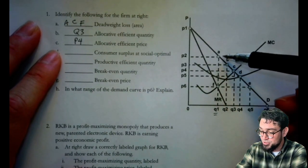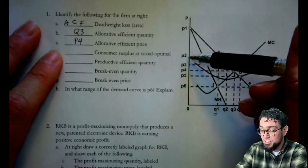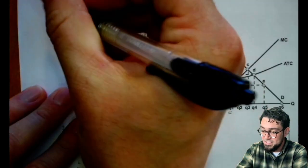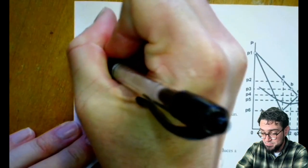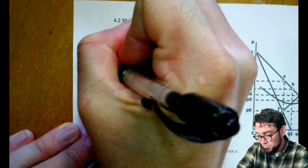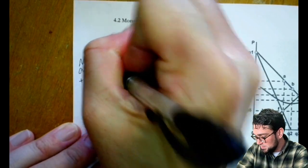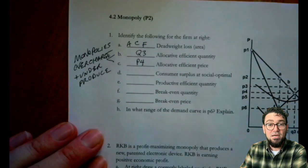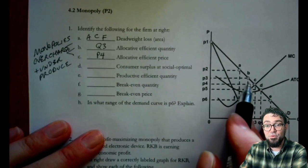Now, I know that they're actually charging way up here, price P2, and they're producing Q1. So we often would say that as a result of this, monopolies overcharge and underproduce. They don't produce enough units and the ones that they do have, they charge too much for compared to what would be socially optimal.